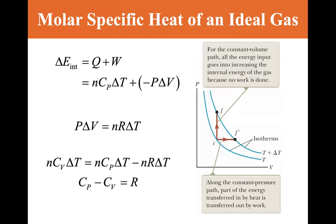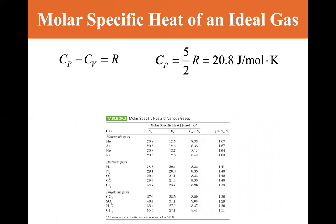So CP minus CV is equal to r, CP is equal to five halves r. If we put three halves r for the CV, we'll get that CP is equal to five halves r, and that's equal to 20.8 joules per mole per degree Kelvin. And we can see that here for the monatomic gases, they're all 20.8 for helium, argon, neon, and krypton.